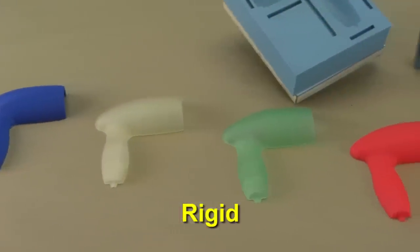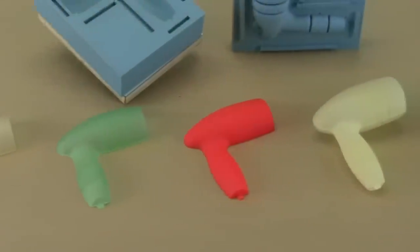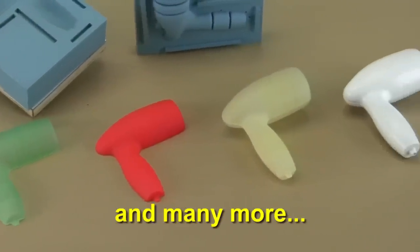BJB manufactures castable polyurethanes that feature a wide variety of properties. Rigid, flexible, tintable, fire retardant and so on.